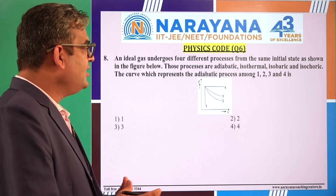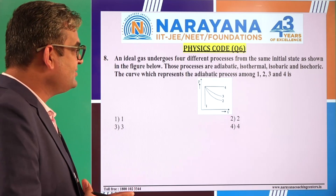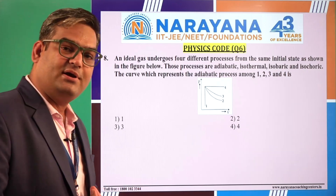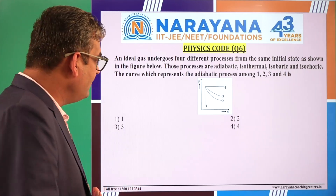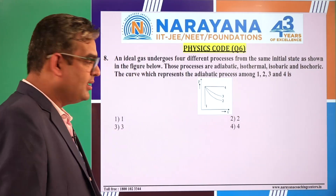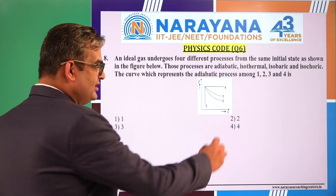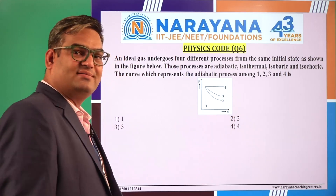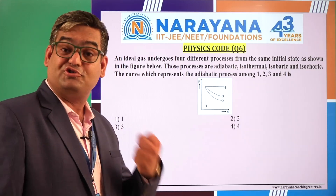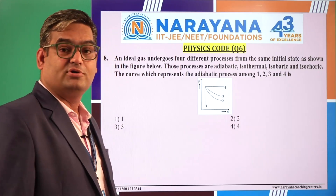An ideal gas undergoes 4 different processes from the same initial state as shown in the figure — adiabatic, isothermal, isobaric, and isochoric. The curve representing the adiabatic process among these 4 is? Process 4 is definitely isobaric, and process 1 is definitely isochoric because volume is constant. Among the remaining two processes, the adiabatic process has a much steeper curve.